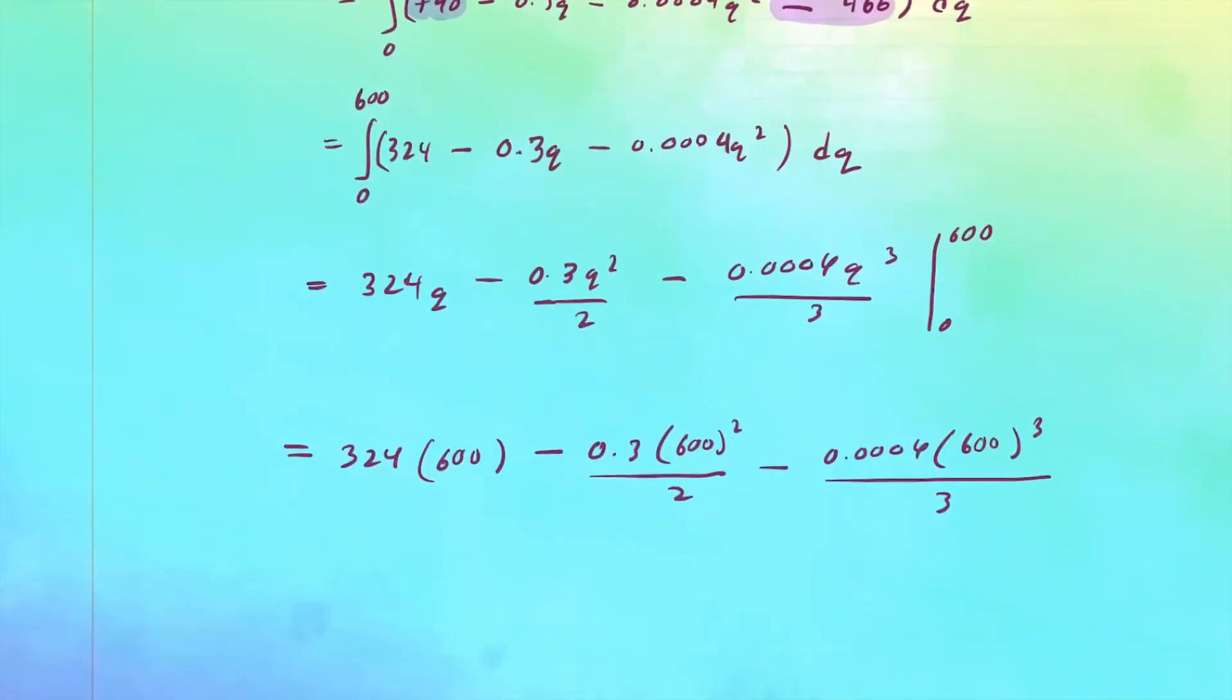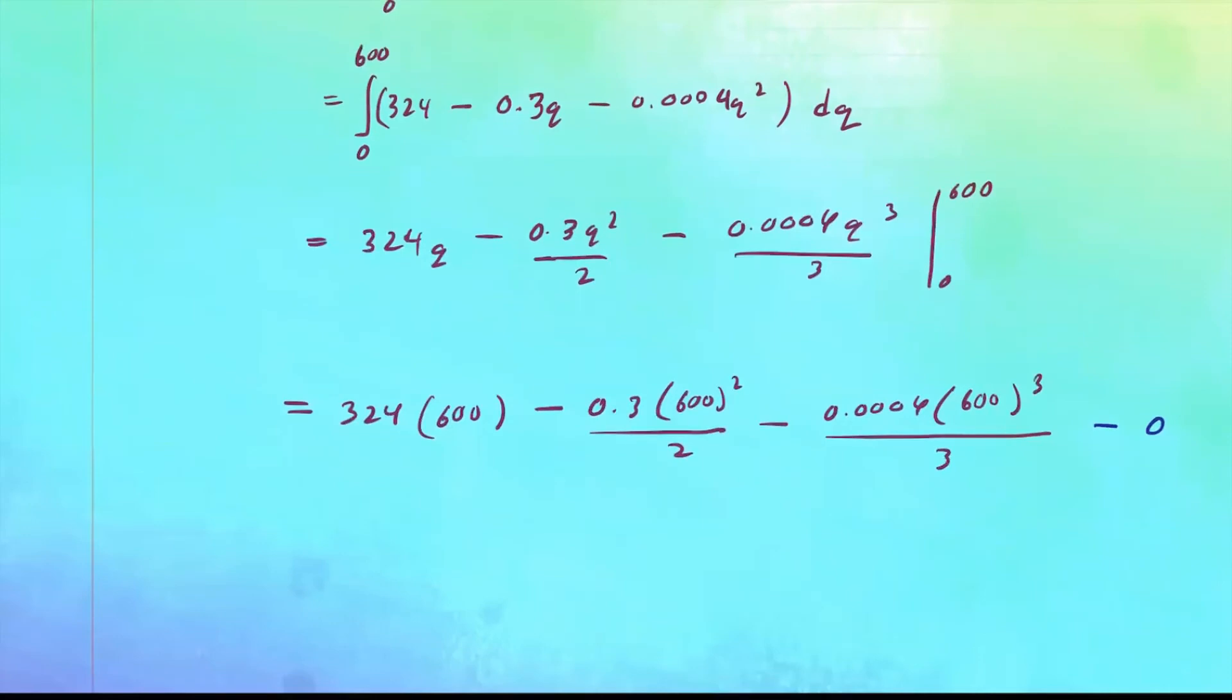And then when you plug in the lower limit, so this one into all of these, you're going to get 0 because everything has q in it. So we don't really have to write that, but you do need to know that for yourself. So it's minus 0. Now let's evaluate this.